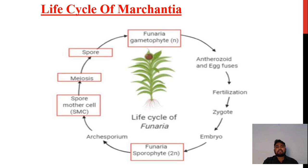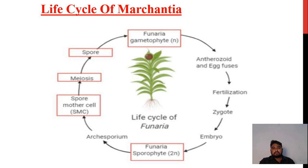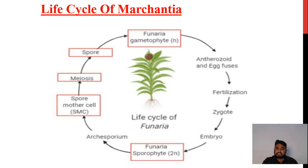The life cycle of Funaria gametophyte: antheridia produce sperm; fertilization forms the zygote; the zygote develops into an embryo, then Funaria plant; the archegonia produce spores via meiosis through the spore mother cell; spores germinate to form the protonema. This completes the life cycle of Funaria.